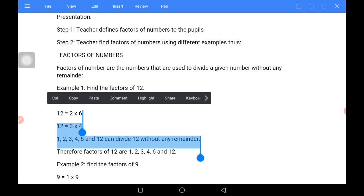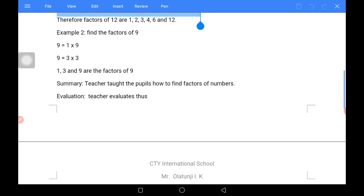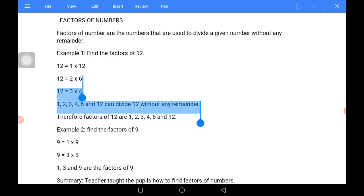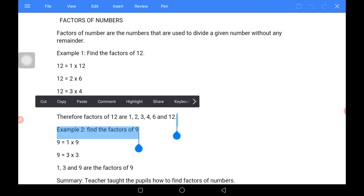For example, 12 is a given number. What are those numbers that we can use to divide 12 without any remainder? 1 is an example. 1 goes into 12, 12 times. 2 can also go into 12 because 12 is an even number, so 2 can divide it without any remainder. 2 goes into 12, 6 times. 4 can also go into 12, 3 times, which means that 3 can also go into 12, 4 times.